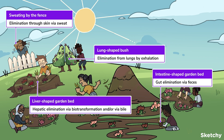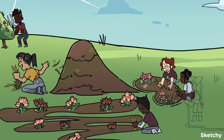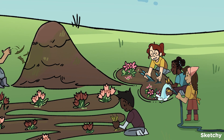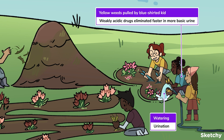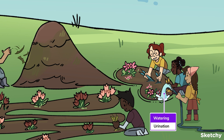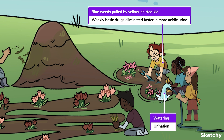Let's take a closer look at renal clearance. We can alter the elimination characteristics of some drugs by altering the pH of urine. Weakly acidic drugs and their metabolites will be cleared more rapidly by increasing the pH of the urine — alkalinization. At Sketchy, we symbolize acids by the color yellow and bases by the color blue, so these acidic yellow weeds being effectively cleared by our basic blue t-shirt wearing kid should help you remember this. The opposite is also true: the clearance of weakly basic drugs and their metabolites is favored by decreasing the pH of the urine — acidification. See those basic blue weeds being yanked out by our acidic yellow friend.